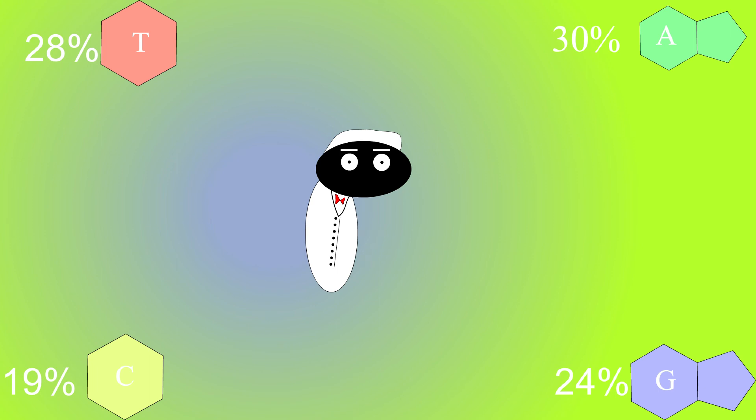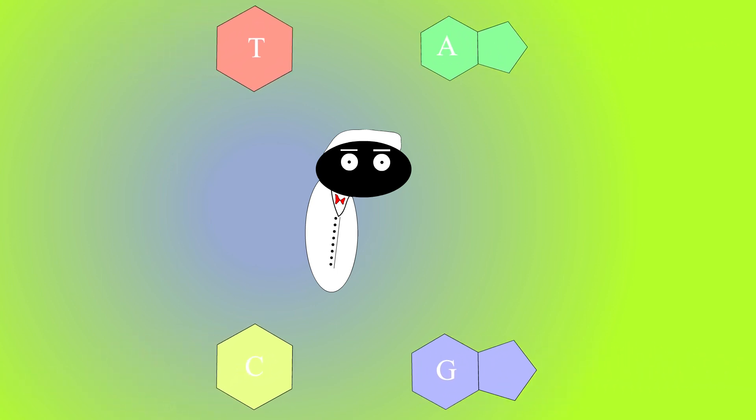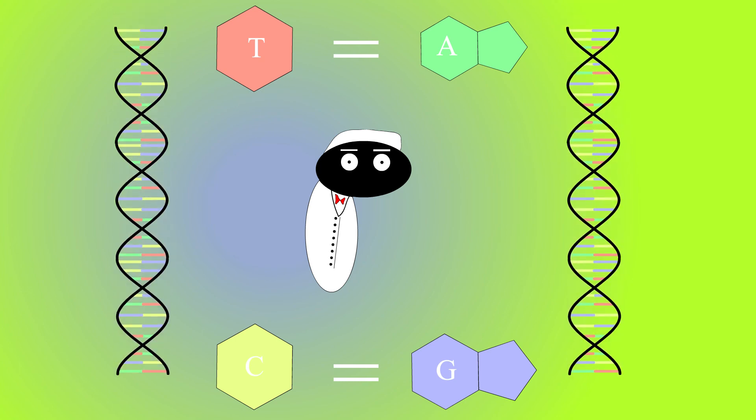Refining his methods, Chargaff would later discover that A and T and G and C were always in equal amounts. Watson and Crick would later use this as a key piece of evidence in arguing for their infamous proposal for the double helix structure of DNA.